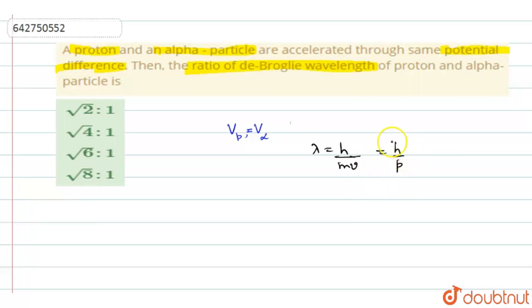Now we have to write this expression in terms of potential difference. So when you have to write in terms of potential difference, first you have to write it in terms of energy. When you write in terms of energy, we know that p will be equal to root 2mk where k is the kinetic energy. So lambda will be equal to h by root 2mk.